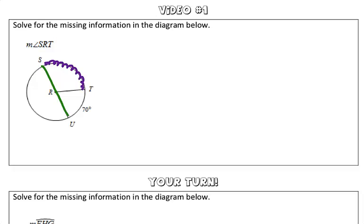We see that SU is a diameter. Well, if SU is a diameter, that means that the measure of arc STU has to be 180 degrees, or it's a semicircle, or half of a circle.